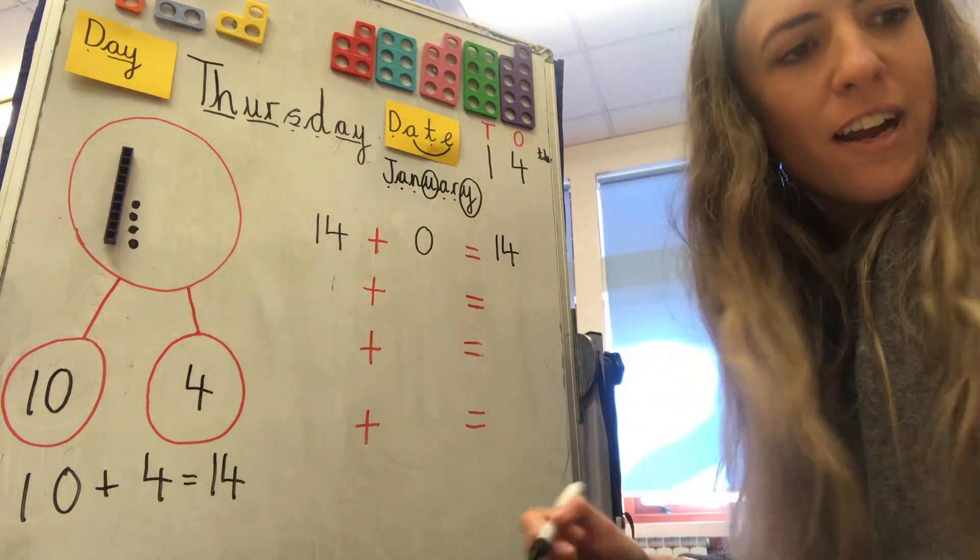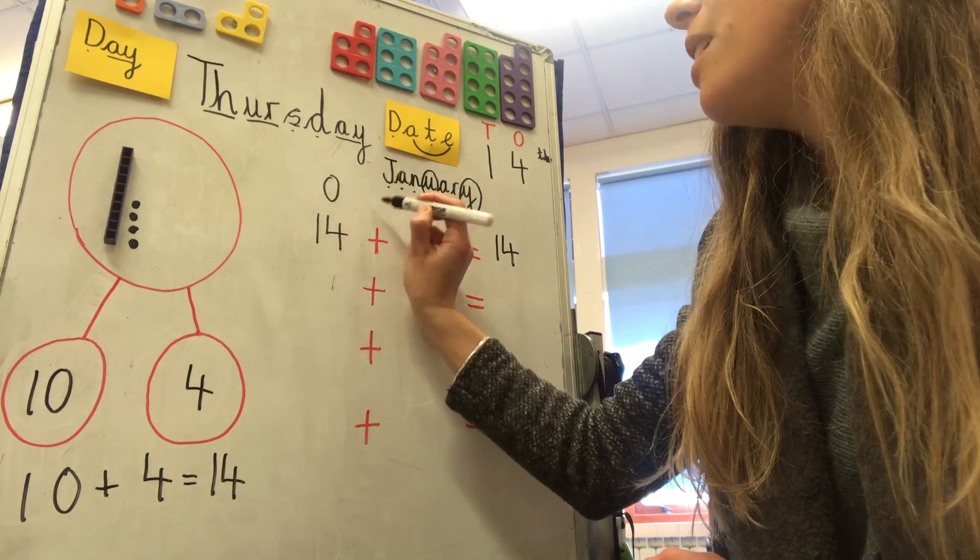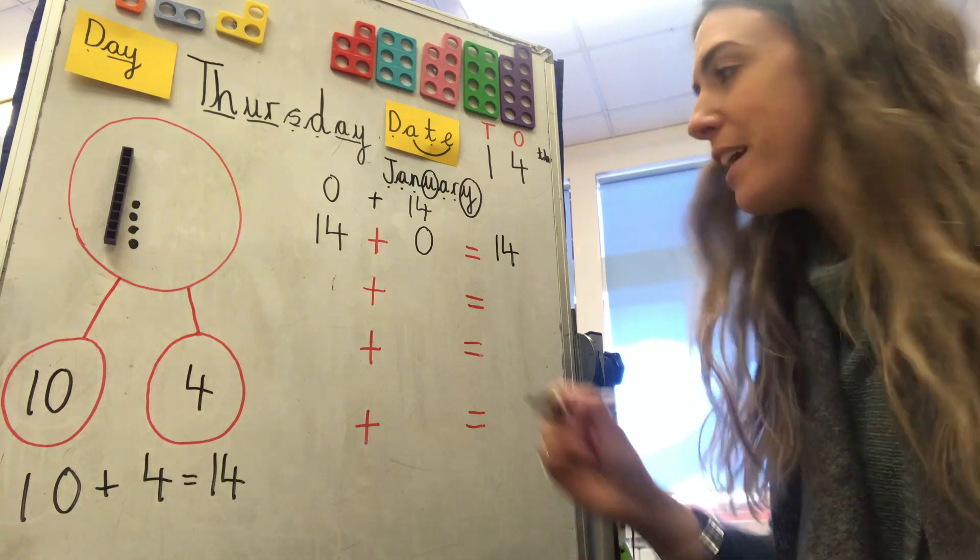Okay, could I do it the other way around? Yes, I could. I could have it zero, add fourteen, equals fourteen. I could have it that way around.